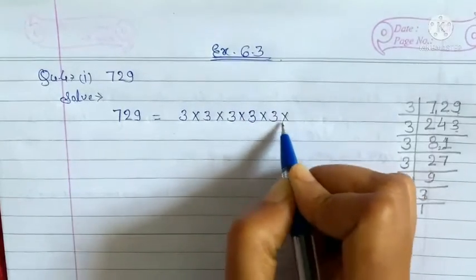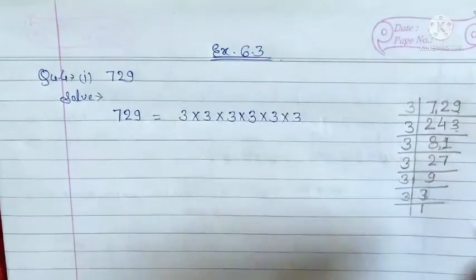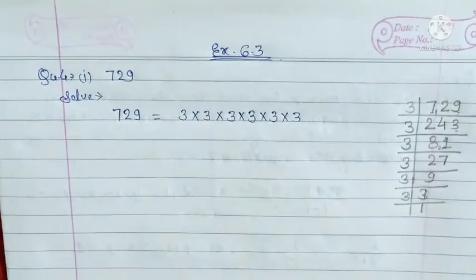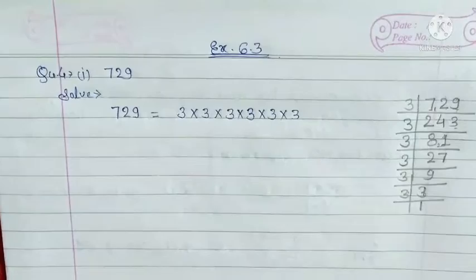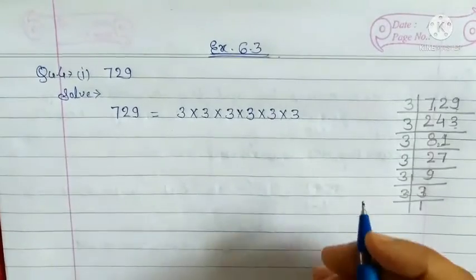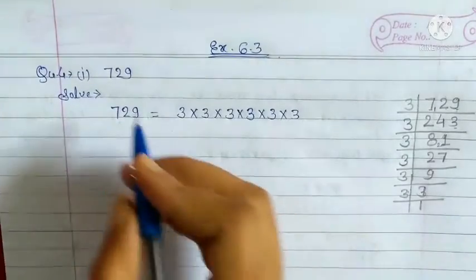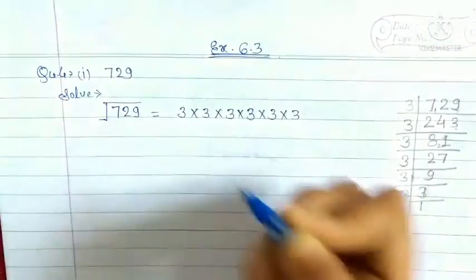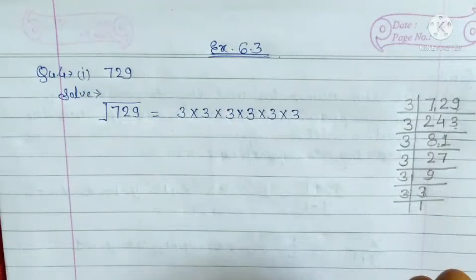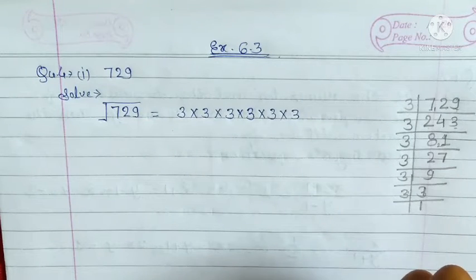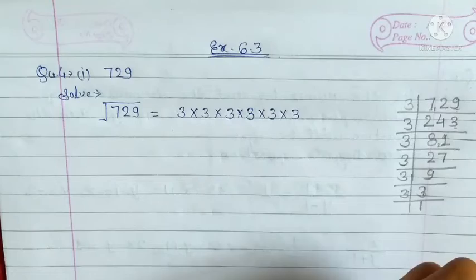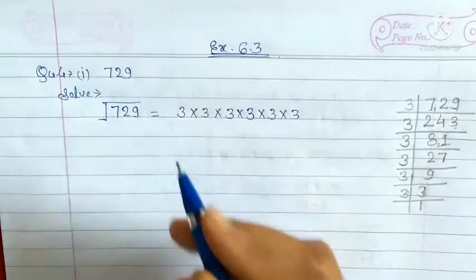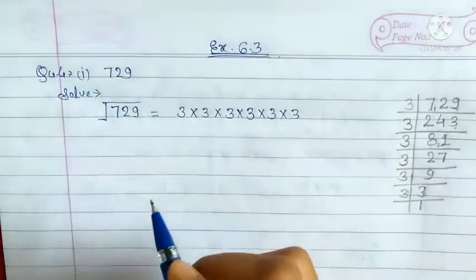We will now find the square root of 729. When we take the square root of 729, we pair up the prime factors.